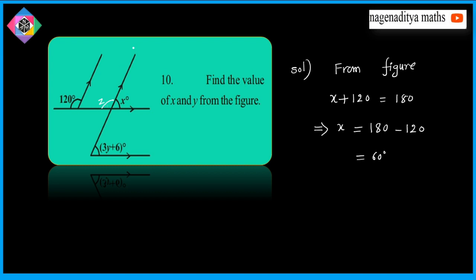Also, we observe these two lines are parallel and this is a transversal, and these two angles are corresponding angles. Also, X is equal to 3Y plus 6 degrees, because of corresponding angles.